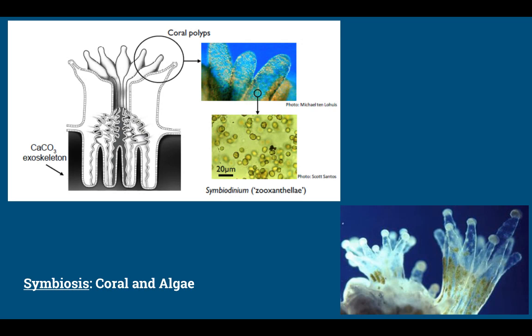In this symbiotic relationship, coral digests food, captures nutrients, and releases CO2. The algae use that CO2 during photosynthesis to produce sugars and nutrients, then release those sugars to the coral. The coral gets energy from the sugars; the algae get the CO2, nutrients, and a safe place to live inside the limestone skeleton. Because of this dependence on photosynthetic algae, corals can only live in shallow waters where light can penetrate.